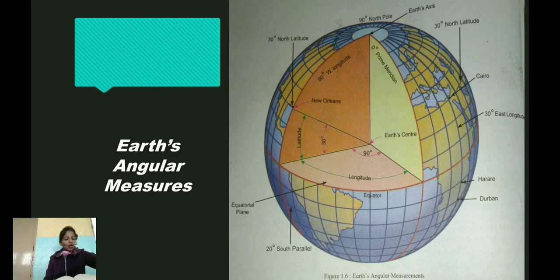A line joining all the places located to the north of the equator at an angular distance of 30 degrees is the 30 degree north parallel. Hence, all the places on this parallel will be at the same latitude which is 30 degrees N. New Orleans in North America, Cairo in Africa, and Basra and Lhasa in Asia are all located on 30 degree N parallel.